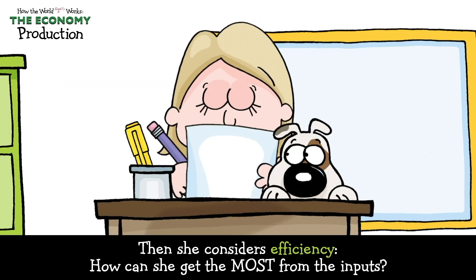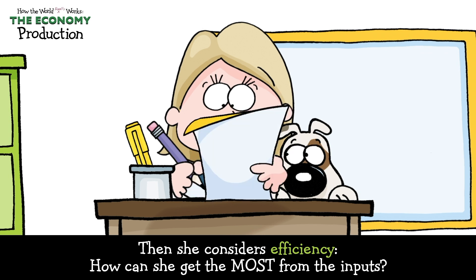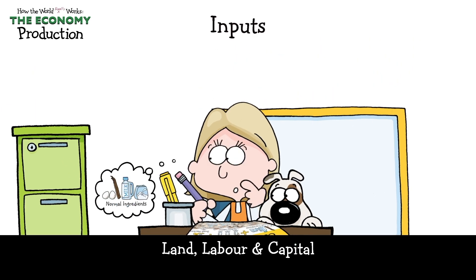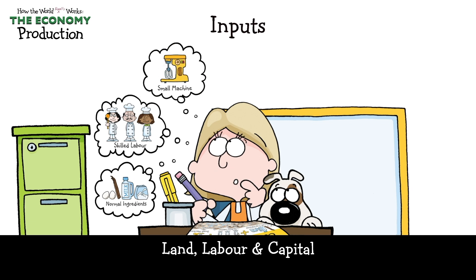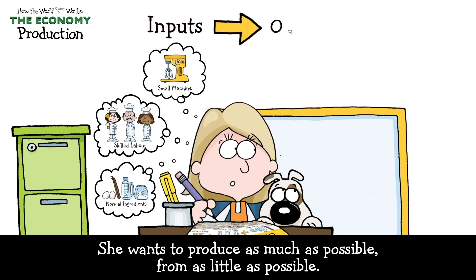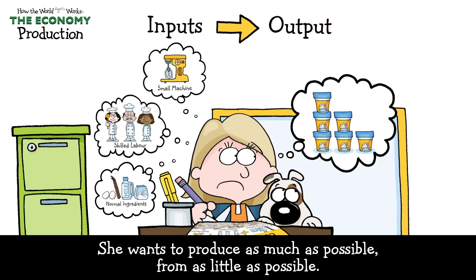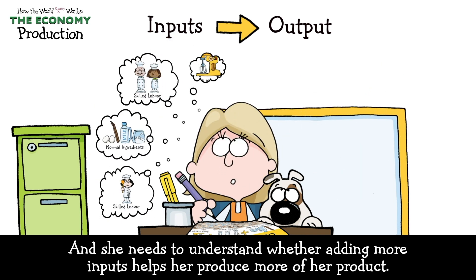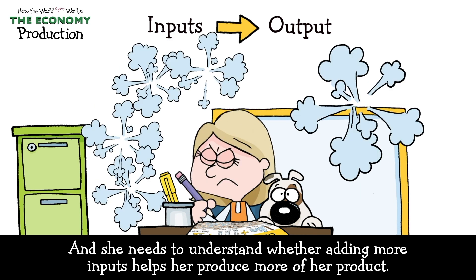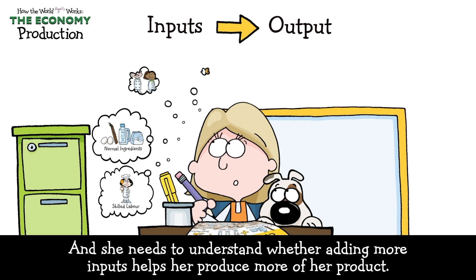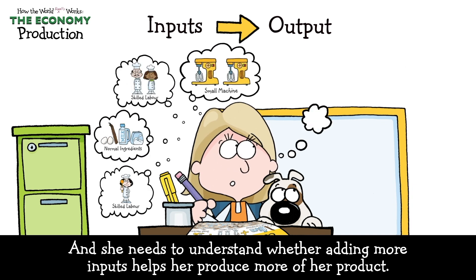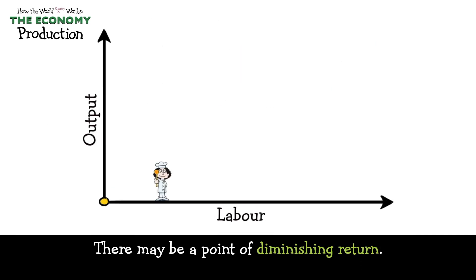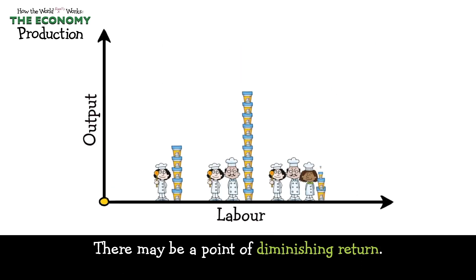Then she considers efficiency. How can she get the most from the inputs — land, labour and capital? She wants to produce as much as possible from as little as possible. And she needs to understand whether or not adding more inputs helps her produce more of her products. There may be a point of diminishing return.